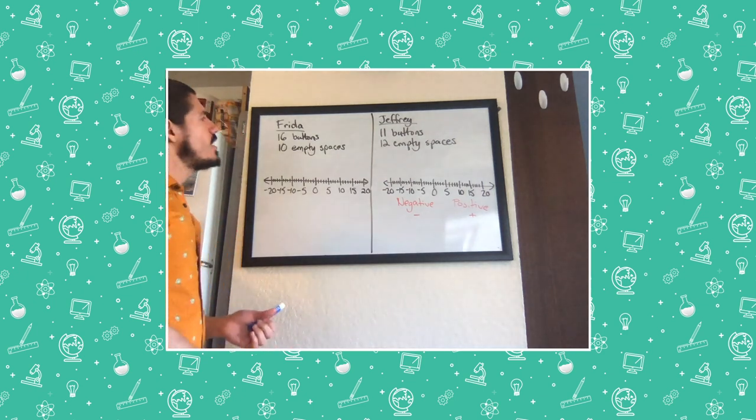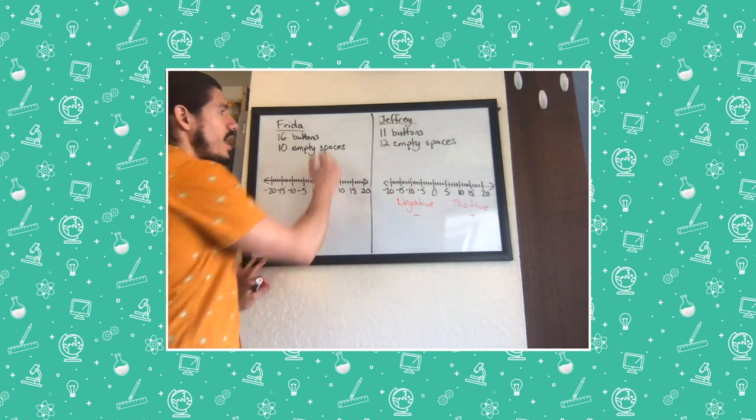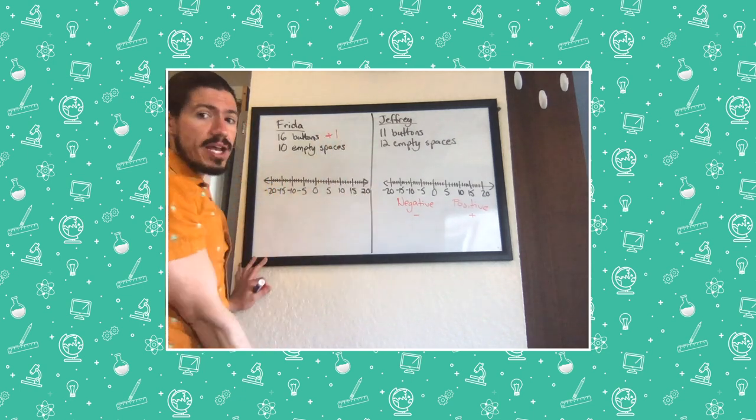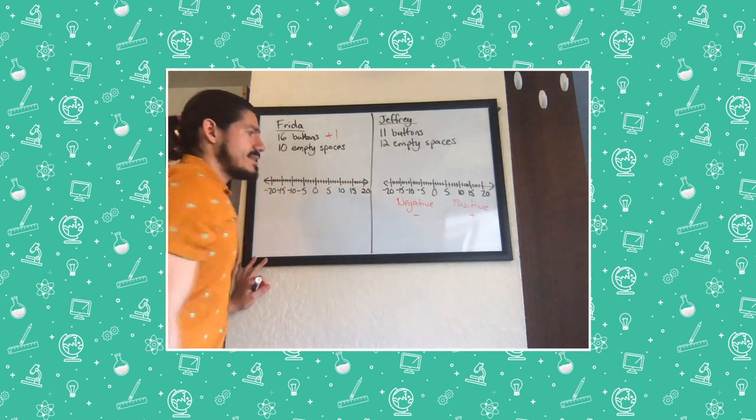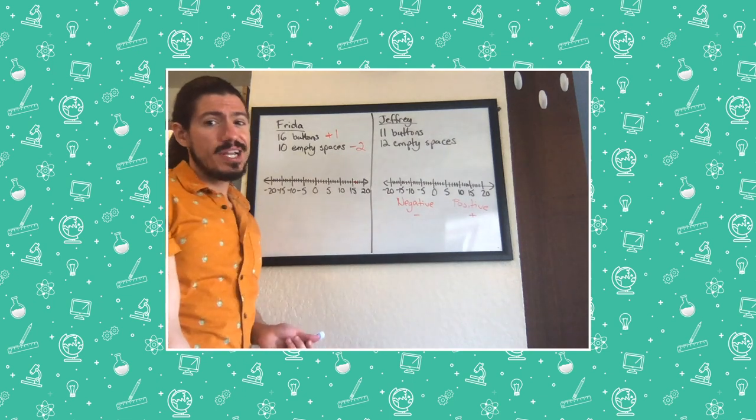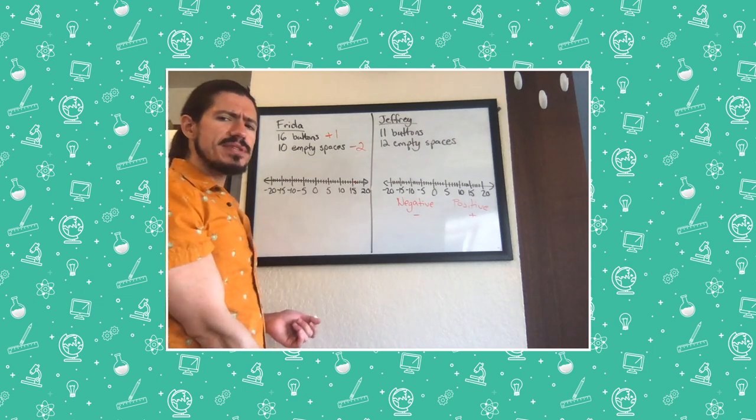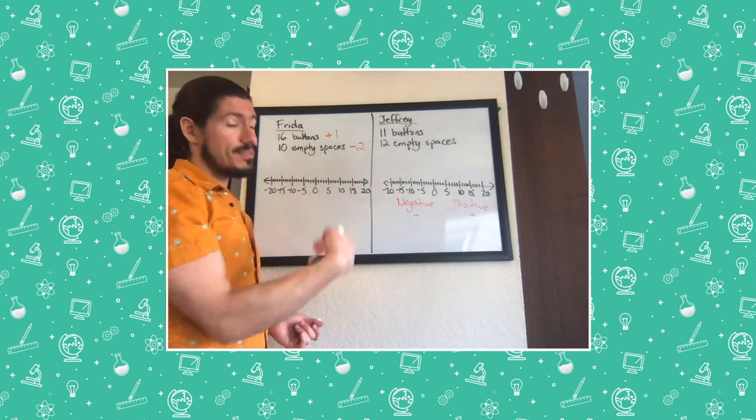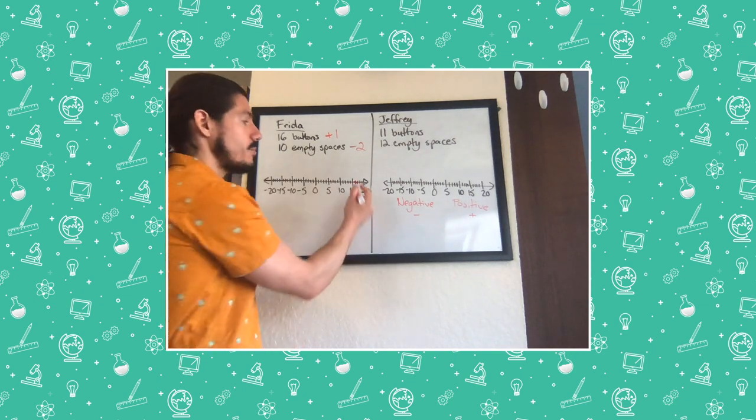To the right of zero, we've got those positive numbers. Those you've been familiar with for a really long time. And then to the left of zero, we've got those negative numbers. There's things that we can't count but, hey, they're still really useful for us in daily life. So let's see if we can work out how many points they got. Let's start with Frida. So Frida had 16 buttons. Remember, every button is worth one point. So I'm going to go ahead and put Frida here on 16.